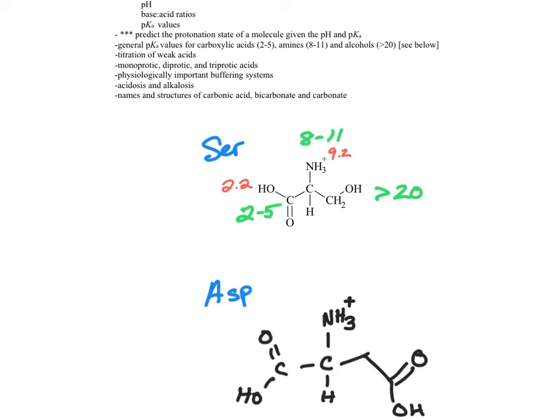The pKa of the carboxylic acid we said was 2.2. Fits in the range, but now we have an exact value. The amine, 9.2, again, in the range, but exact value is now provided. We're not given in the chart a pKa for the side chain because it's greater than 20, and we can never achieve greater than 20 in water.